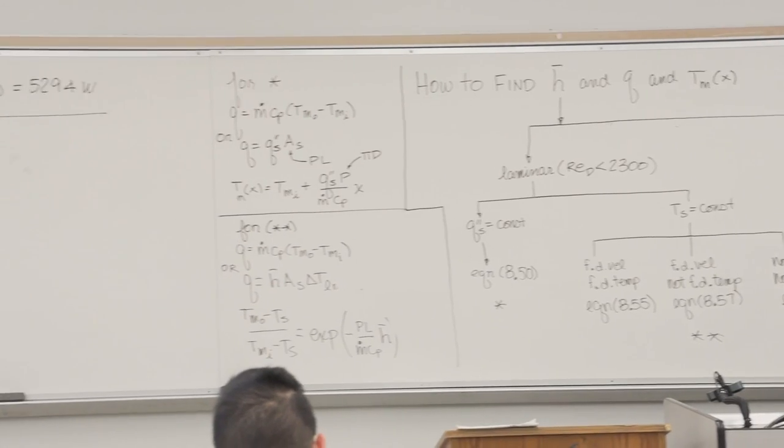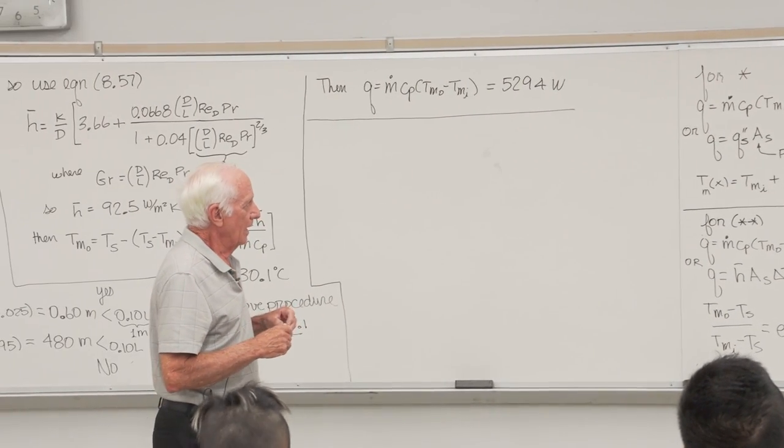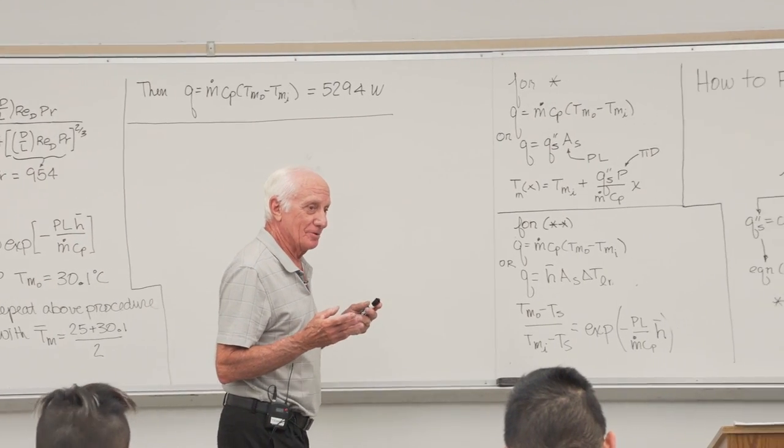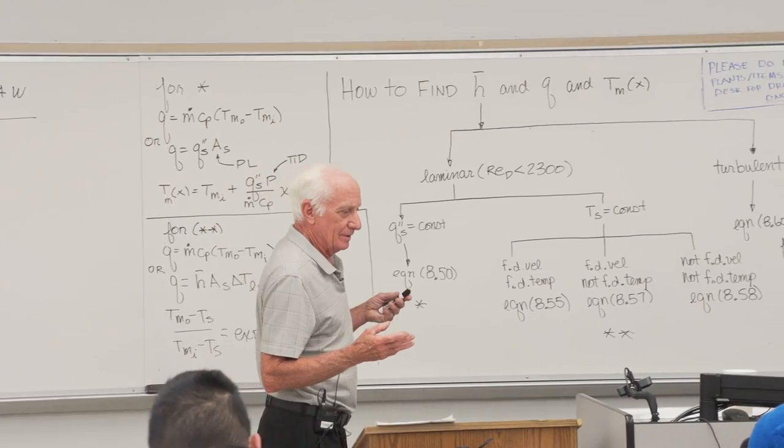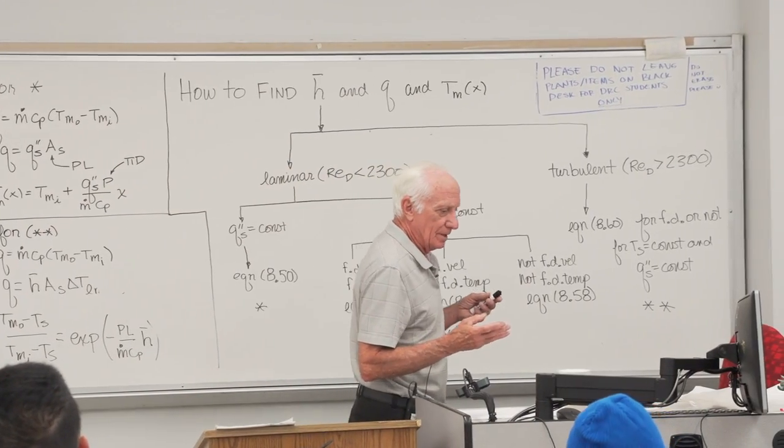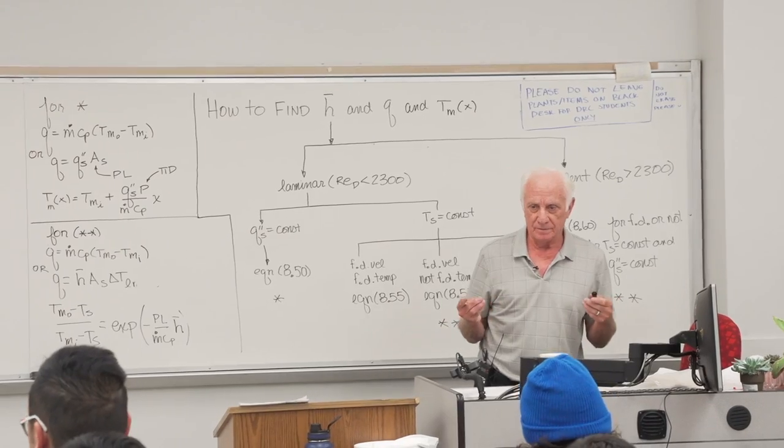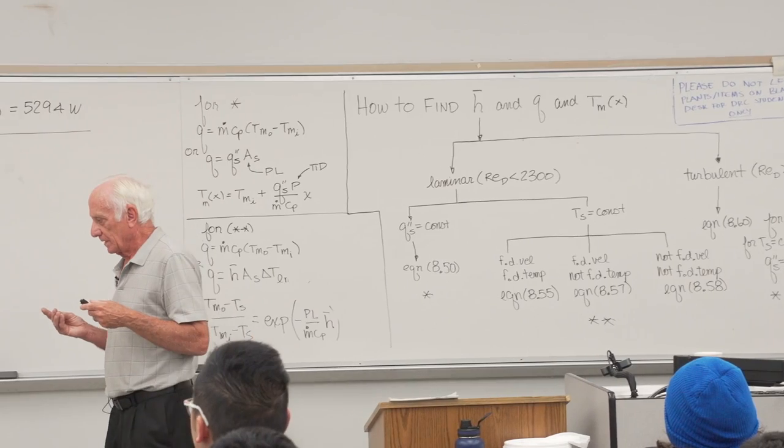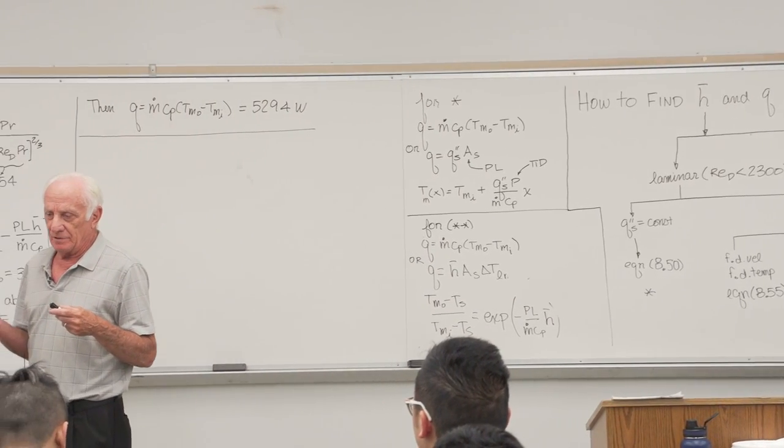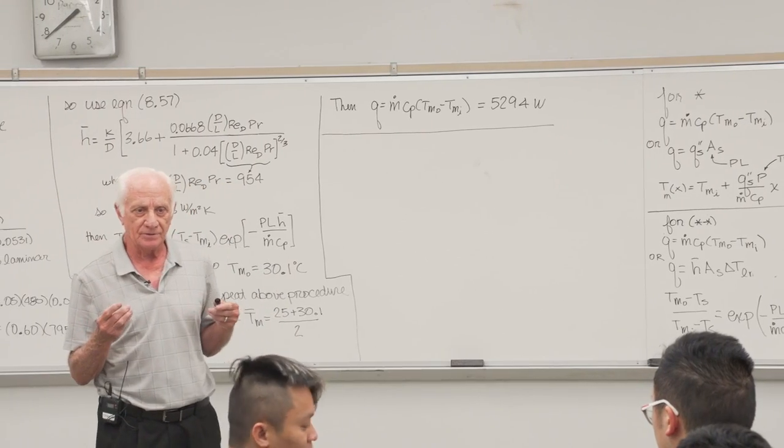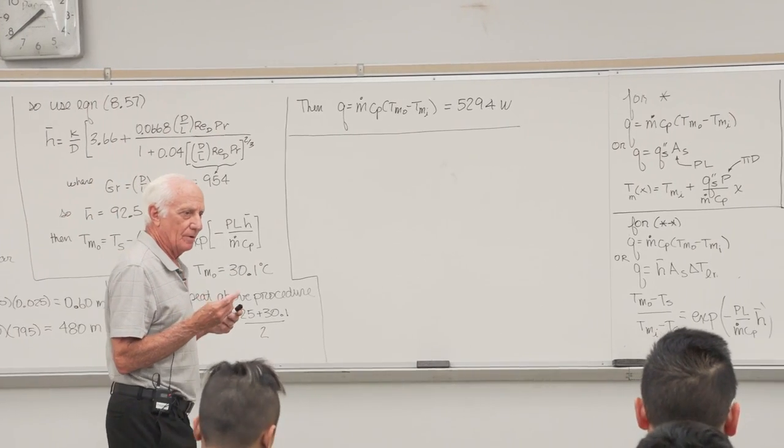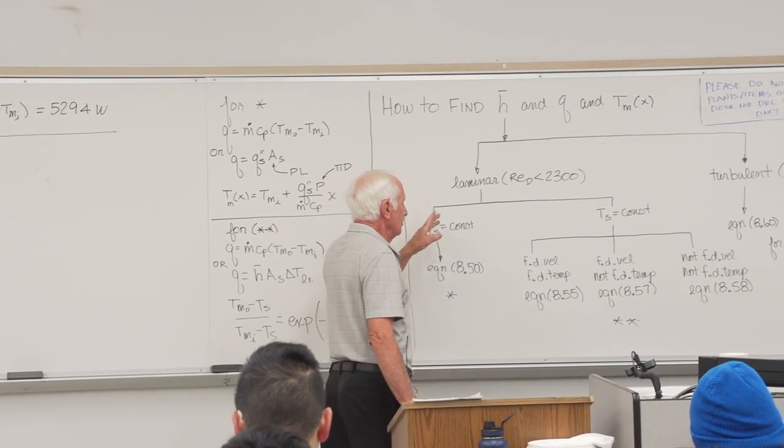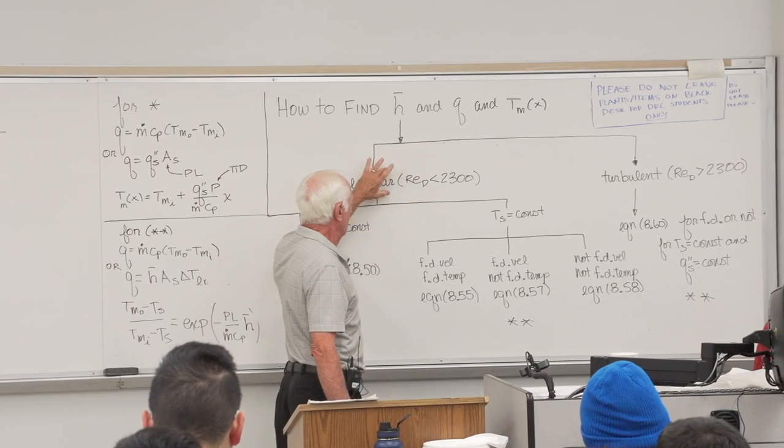I've put together a little decision tree here that will help you to decide how to find H and Q and T mean as a function of x. One of the first things to do is find the Reynolds number. Is it laminar flow or turbulent flow? There's a magic Reynolds number, 2,300.